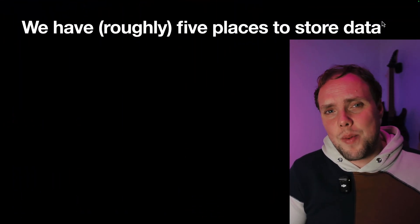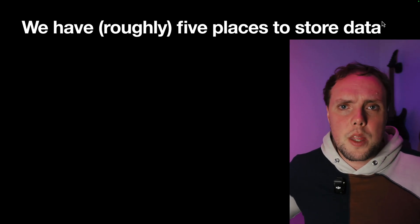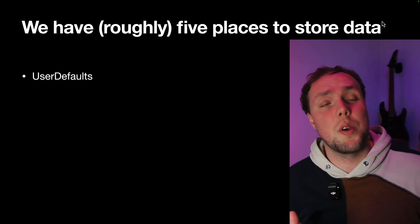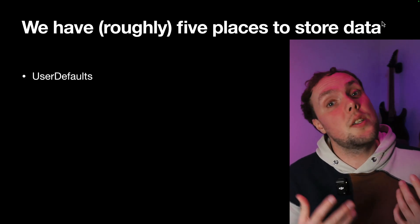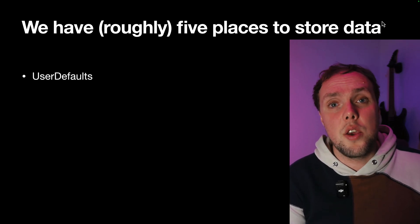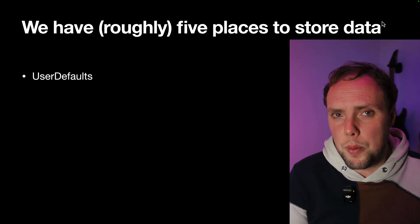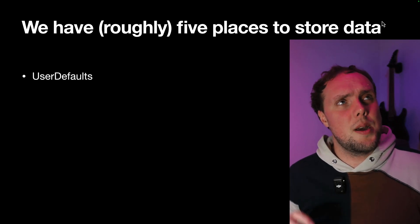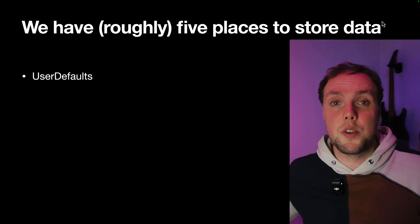I like to say that there are about five places we can store data on iOS. One of them is User Defaults. This is probably the one you're most familiar with, or one you've used maybe without even realizing it, because as soon as you use the AppStorage property wrapper in a SwiftUI view, you're already putting data inside User Defaults. User Defaults is great for small, simple bits of data, but it doesn't lend itself well to other types of data.